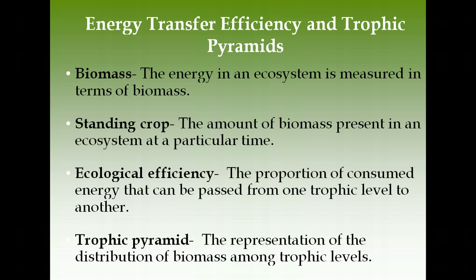Ecological efficiency is the proportion of consumed energy that is passed from one trophic level to the next — from producers to primary consumers to secondary consumers and so on. Efficiency can range from 5 to 20%, but the average is about 10% across ecosystems. Generally, AP exam questions will use that average of 10%.